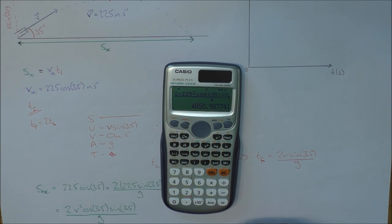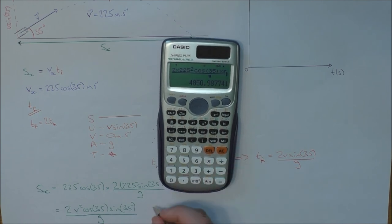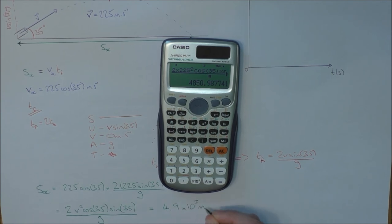Now that's come out to 4.9 kilometers, which equals 4.9 times 10 to the 3 meters. And that is to two sig figs, so I can double underline my answer there.